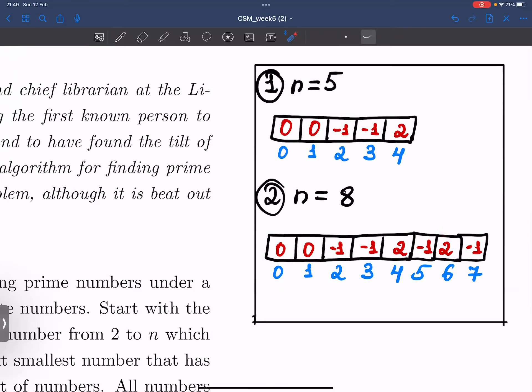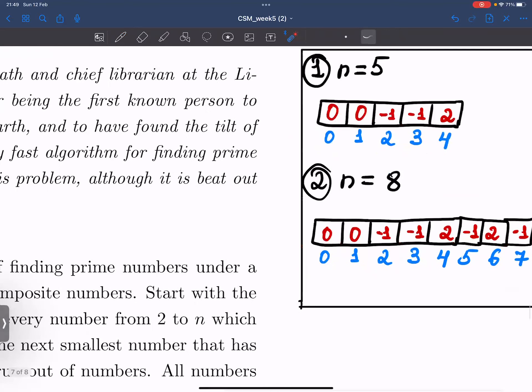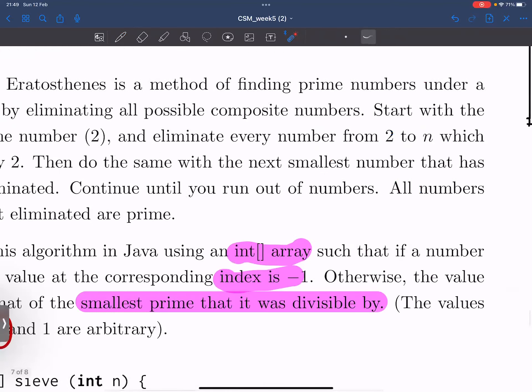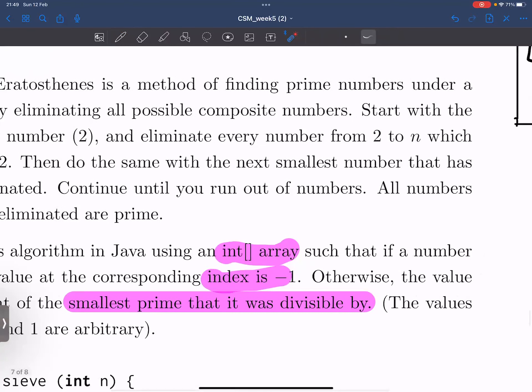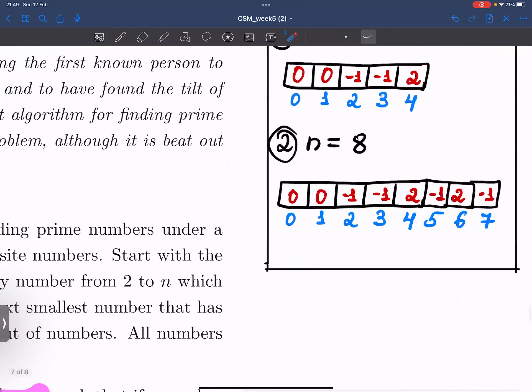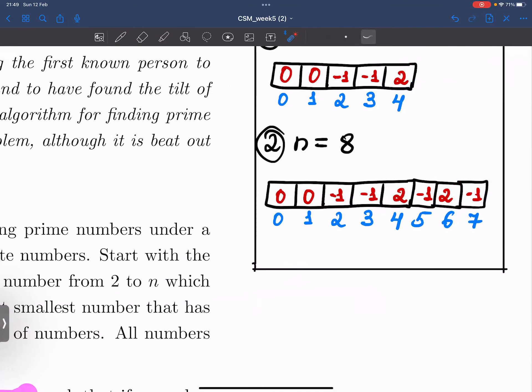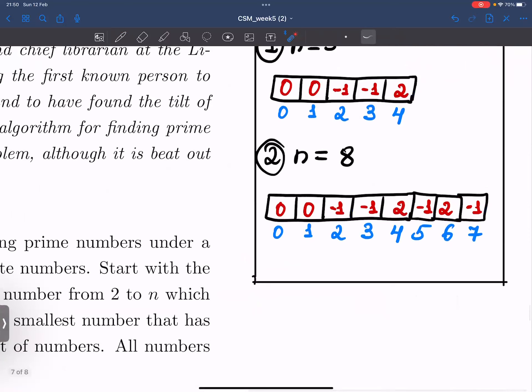And at index 6, it gets a bit tricky. Because as we know, 6 is equal to 2 multiplied by 3. So which number here we need to choose? The prompt says that the smallest prime number that it was divisible by has to be in that index, if the number is composite. And since 6 is composite, we need to put 2, because 2 is the first prime number that 6 was divisible by.